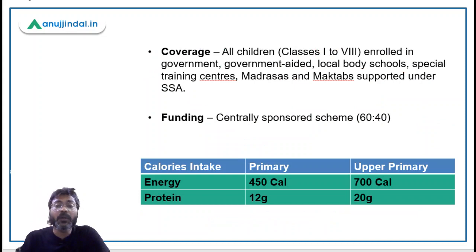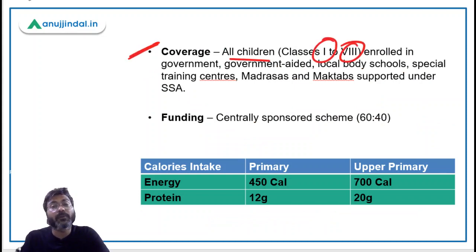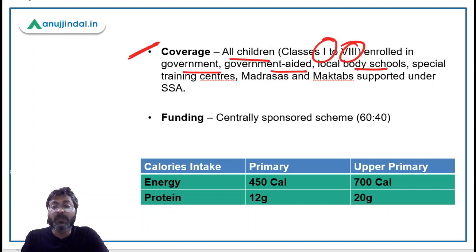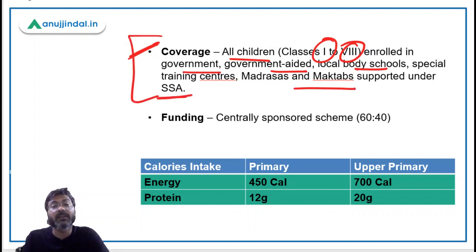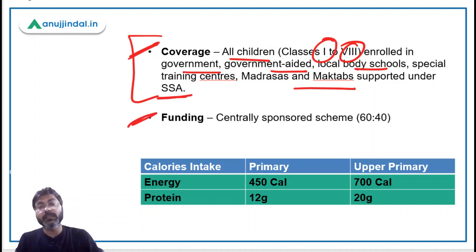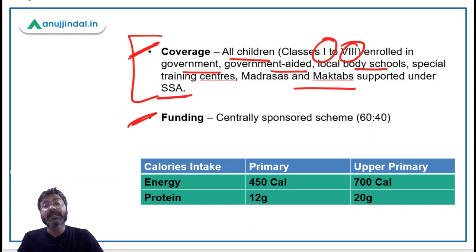Regarding coverage, all children from Classes 1 to 8 enrolled in government schools, government-aided schools, local body schools, special training centers, madrasas, and maktabs supported under Sarva Shiksha Abhiyan are covered under the Midday Meal Scheme. It is a centrally sponsored scheme, meaning there is a funding ratio between center and states.